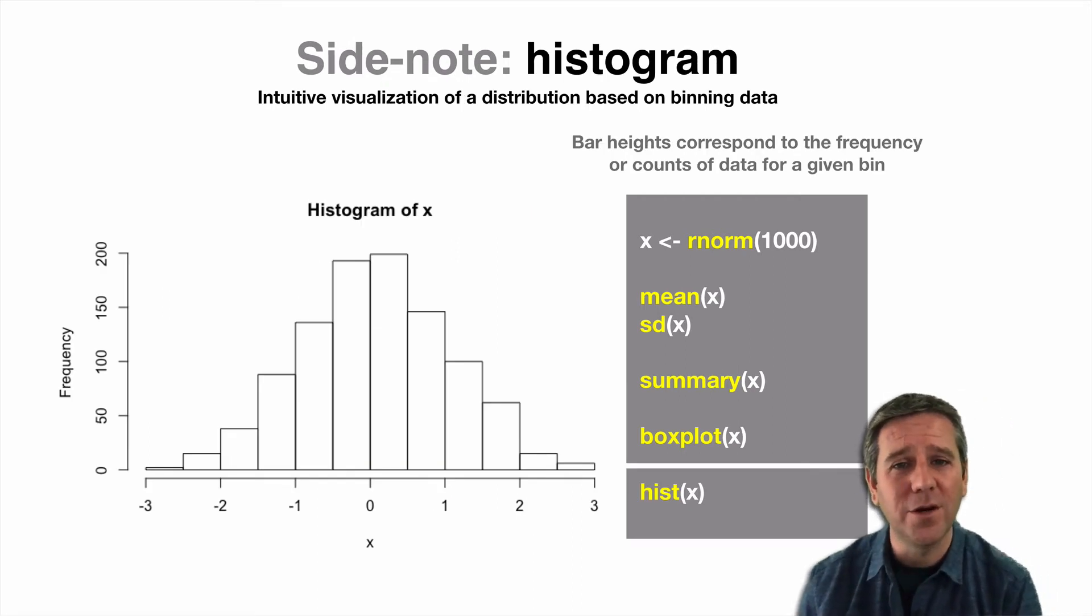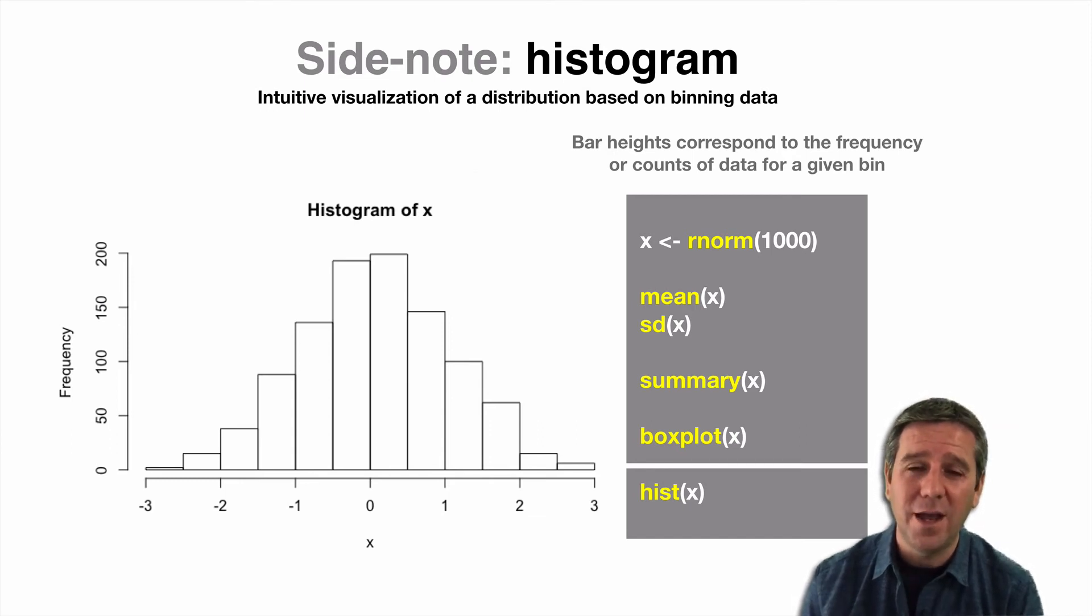Another popular and probably more intuitive visualization for distribution of data is the classic histogram, and this has been used for a long time. The basic idea is that it's based on binning of our data into equal width bins and then drawing rectangles for each bin with the heights corresponding to the data counts within a particular bin.